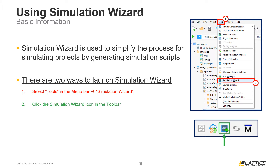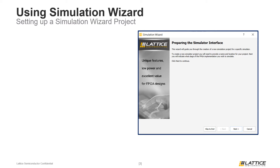The following few slides will discuss the process for setting up a Simulation Wizard project. Once the Simulation Wizard is initialized, a window similar to the figure on the slide should appear. This is the initial page for the Simulation Wizard tool, and outlines the process for setting up a simulation. There are no configurable settings on this page, so users can click the Next button whenever they are ready to proceed.